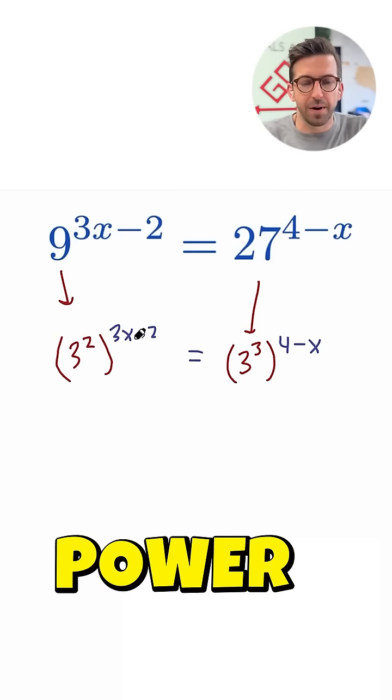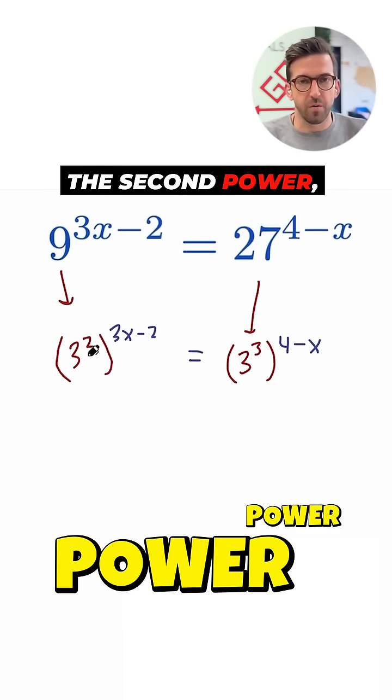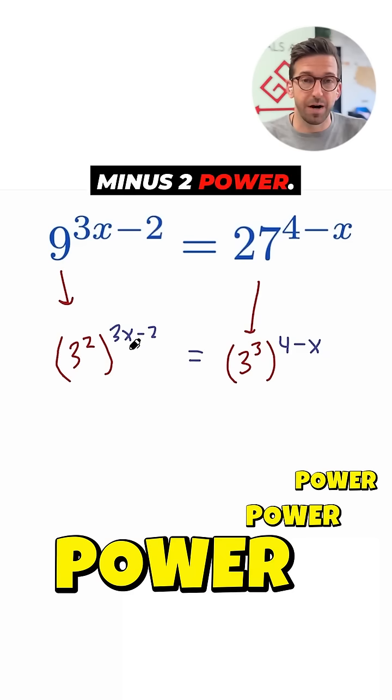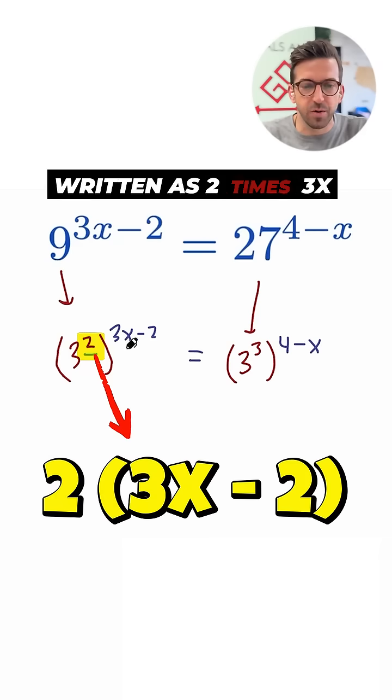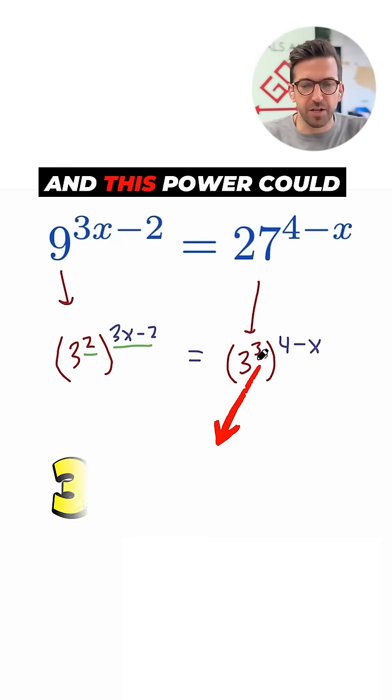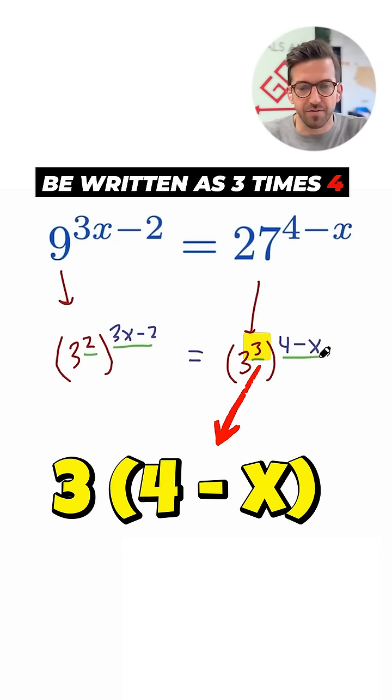If I have a power raised to a power, so I have 3 to the second power then raised to the 3x minus 2 power, what do I do with those powers? I multiply them. So that means this power could be written as 2 times 3x minus 2, and this power could be written as 3 times 4 minus x.